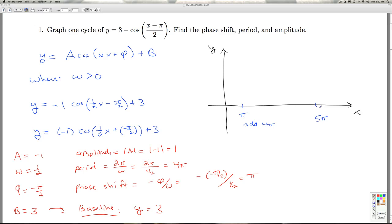Now to determine the quarter marks, I just average these two. Pi plus 5 pi over 2 is 6 pi over 2, that's 3 pi. That's going to give me the point right here in the middle.